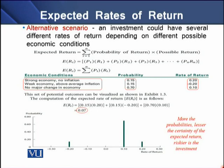For that purpose, we assign a probability to each individual condition and accordingly assign a rate of return to that probability. We then multiply each individual probability by the individual rate of return for that condition, and the sum of these probability-weighted returns is termed the expected rate of return.